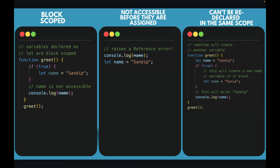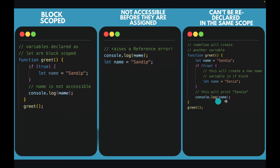Now let's talk about let and const. Both let and const are block scoped. So inside this create function I have an if block where I have declared a name variable, which is not accessible outside this if block because the if statement has created a block scope for the name variable. Let and const are not accessible before they are assigned, so this is going to raise a reference error if I try to access name before defining it. And let and const can't be redeclared in the same scope.